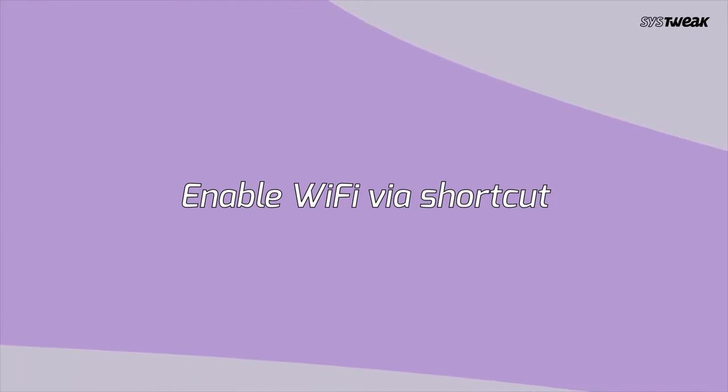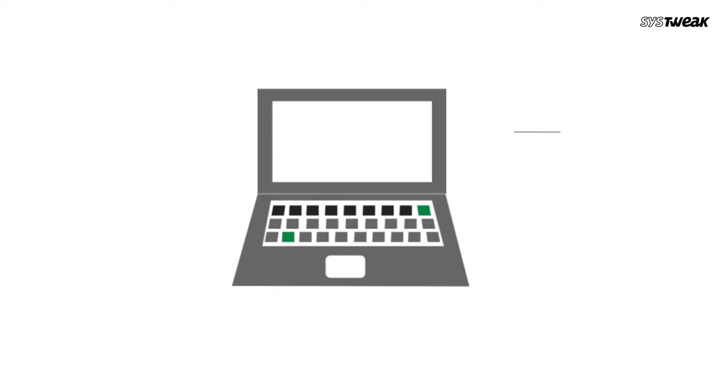Number one: enable Wi-Fi via shortcut. This is helpful when you have turned off your Wi-Fi by mistake by pressing any wrong key. Depending on the laptop model you're using, the specific key to enable Wi-Fi may vary. So look for the small wireless icon on the laptop and press it either using the function key or without it.